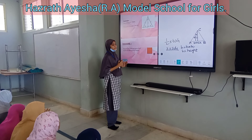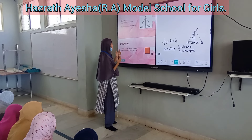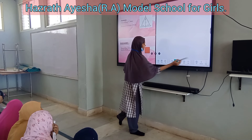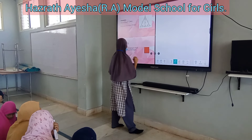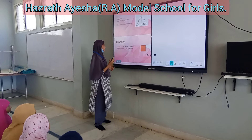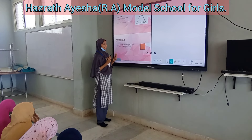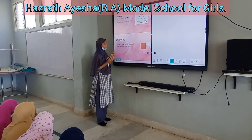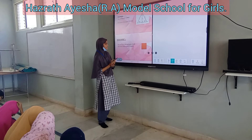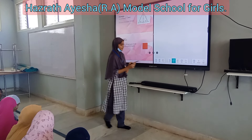Now let's move to square. It is also a type of polygon. Let's see the definition of square. A square is a four-sided polygon where all sides are equal.